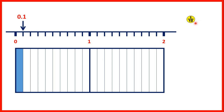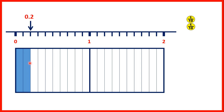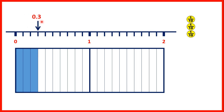We can also use place value counters to show tenths. If we count on another tenth, we now have 2 tenths, which is 0.2. 3 tenths is 0.3, and you're probably getting the hang of this, so I'll speed the video up.